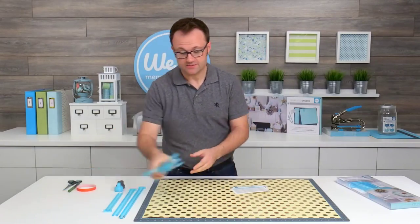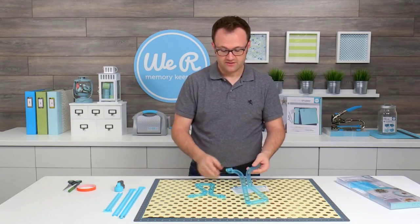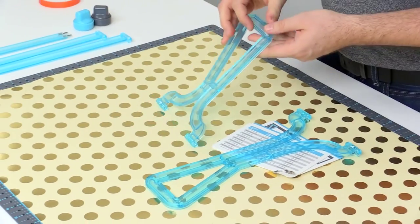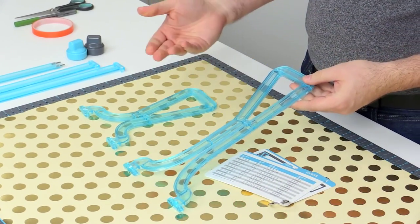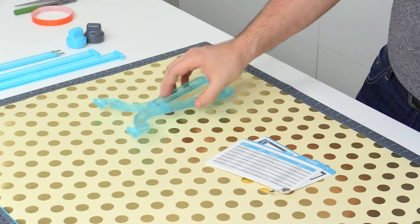Your flower kit comes with two different template guides. Flower number one is a shorter petal flower. Flower number two has a longer petal, similar to a daisy. I'm going to be using flower number two.